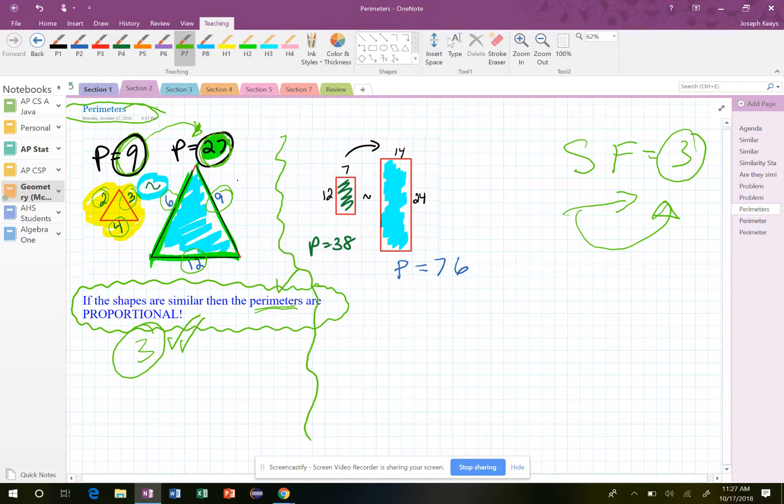That's the whole point of analyzing perimeters when we're dealing with similar polygons. So let's take a look at this other example. It just doesn't work for triangles. It works for any polygon in the world.